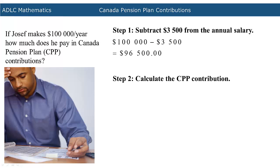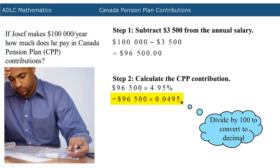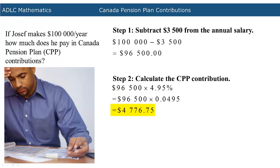The next step is to calculate the Canada Pension Plan contribution. In order to calculate the contribution, multiply the calculated amount by 4.95%. Convert 4.95% into a decimal by dividing it by 100. When you multiply $96,500 by 0.0495, you are left with $4,776.75.